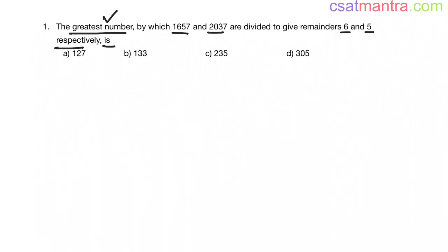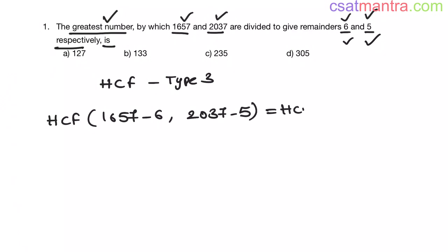The greatest number, that means HCF. By which 1657 and 2037 are divided to give remainder 6 and 5. This is a type 3 problem from HCF concept because remainders are different. So our answer is HCF of 1657 minus 6, 2037 minus 5, which is equal to HCF of 1651, 2032.